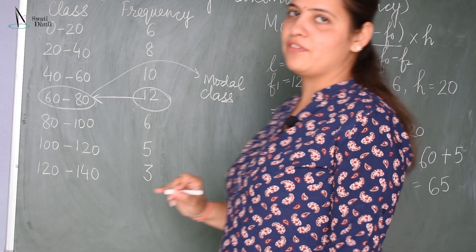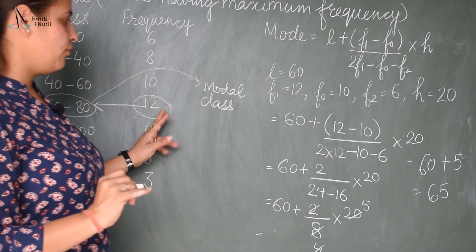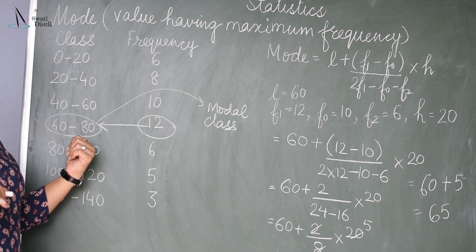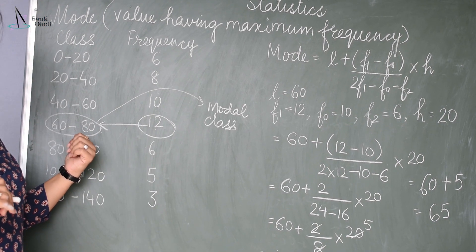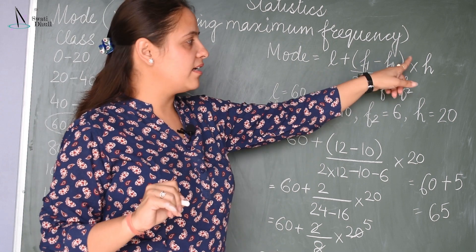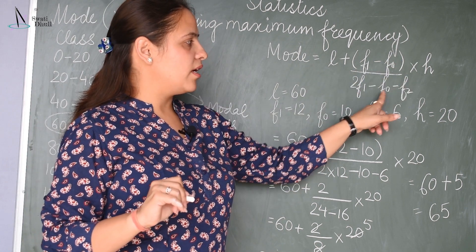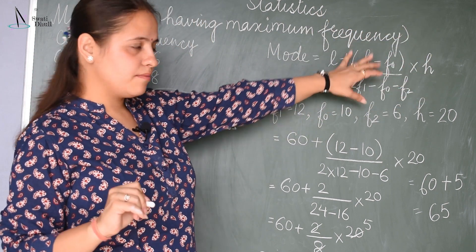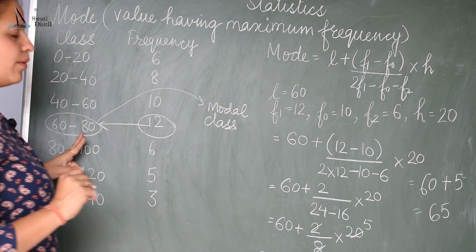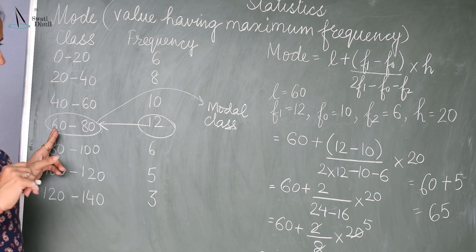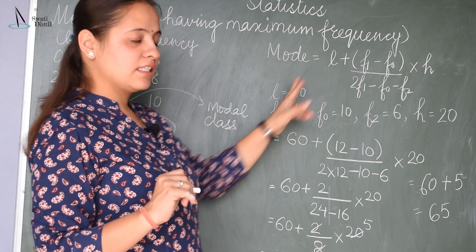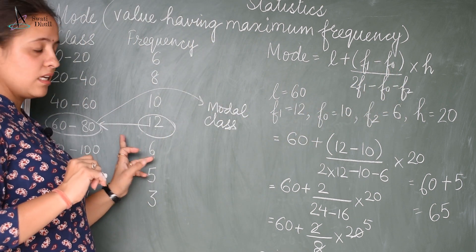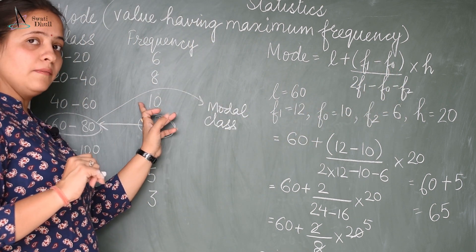So this is how we find the mode. First, identify the maximum frequency and the corresponding class interval — that becomes the modal class. The formula is: Mode = L + (F1 − F0) / (2F1 − F0 − F2) × H. L is the lower limit of the modal class, which is 60. F1 is the frequency of the modal class.